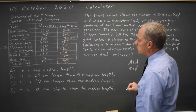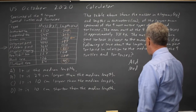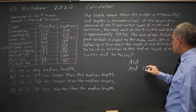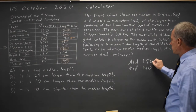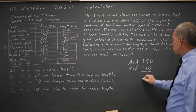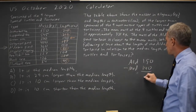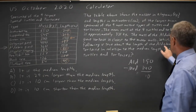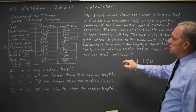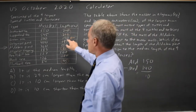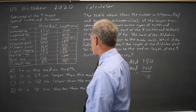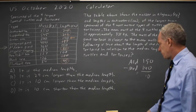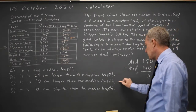The median is 140, and the Aldabra giant tortoise is 150. If we subtract, we get 10. So the Aldabra giant tortoise is 10 centimeters longer than the median.